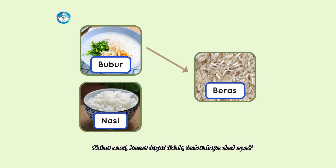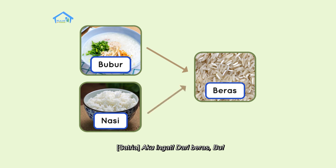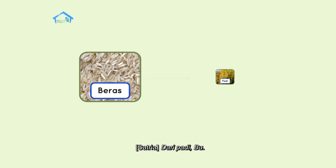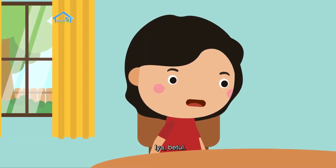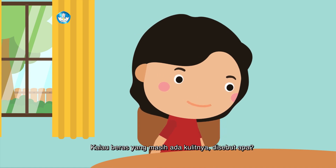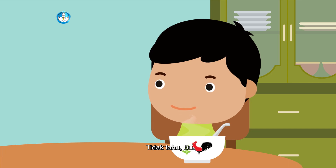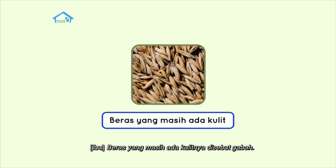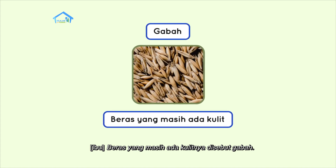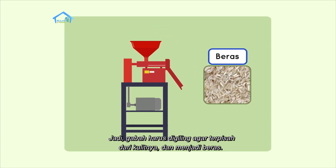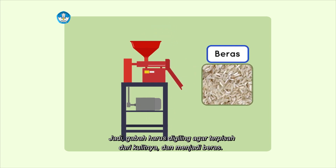Kalau nasi, kamu ingat tidak terbuatnya dari apa? Aku ingat. Dari beras, Bu. Kalau beras, asalnya dari mana? Dari padi, Bu. Iya, betul. Kalau beras yang masih ada kulitnya disebut apa? Tidak tahu, Bu. Apa ya sebutannya? Beras yang masih ada kulitnya disebut gabah. Jadi gabah harus digiling agar terpisah dari kulitnya dan menjadi beras.